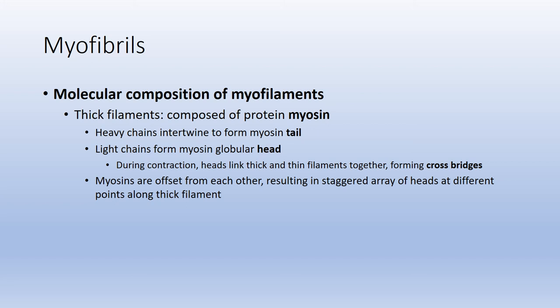When looking at myosin or the thick filaments, think of a golf club. The tail of the myosin is like the shaft of the golf club, whereas the head of the myosin is like the golf club head. Actin and myosin will link up with each other to form what we call a cross bridge, and that is what initiates muscle contraction — the shortening of the muscle.